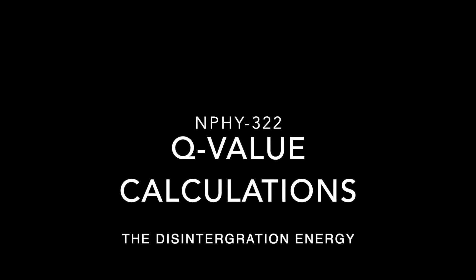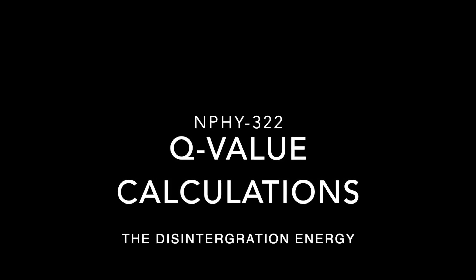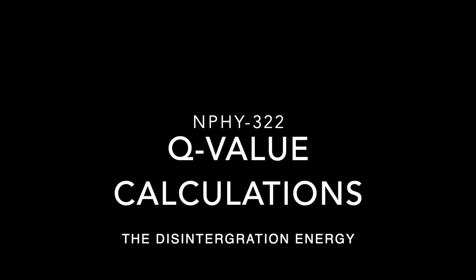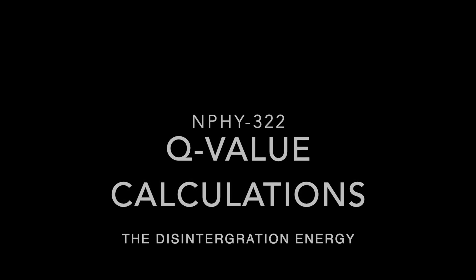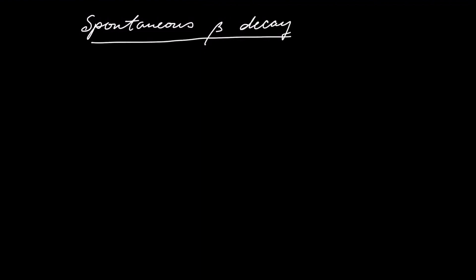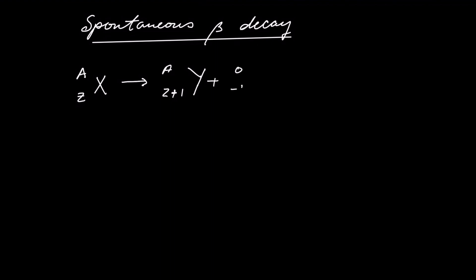Let's calculate Q values for various nuclear reactions. These are also called disintegration energies. We'll start first with beta minus decay, where a parent nucleus X turns into a daughter nucleus, accompanied by an electron emission — also known as a beta minus emission — an anti-electron neutrino, and some energy called the disintegration energy or the Q value.